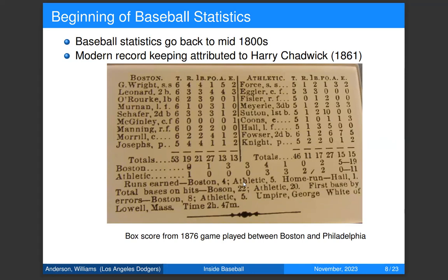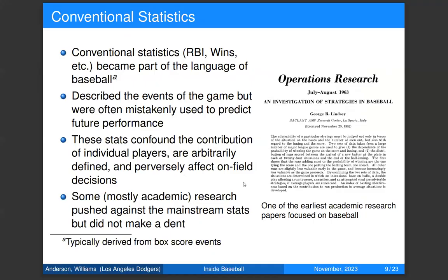Baseball statistics go back to the mid-1800s. Here's an early box score — this is from 1876. If you're familiar with baseball box scores you'll see it bears little resemblance to what we have today. The purpose of keeping statistics was really to communicate what happened in a game to a newspaper audience — you couldn't watch games but you wanted to know how many put-outs were made, how many fielding assists, how many hits. Early baseball statistics were developed by writers for the purpose of telling you what happened in the game. Also notable: one team made 13 errors — unacceptable even in a junior high game.